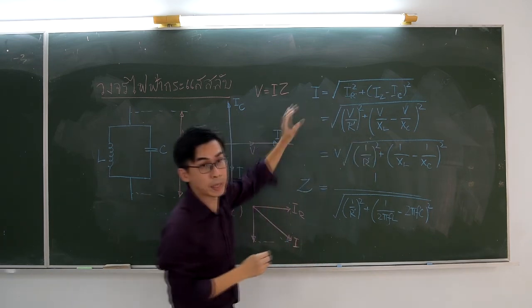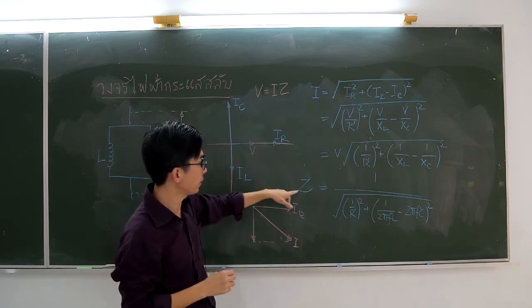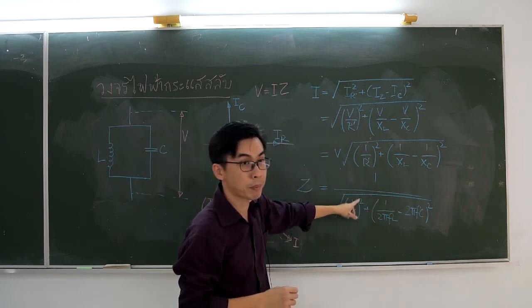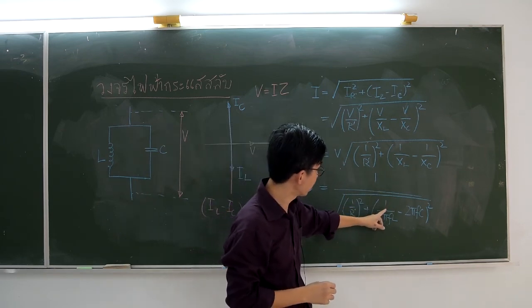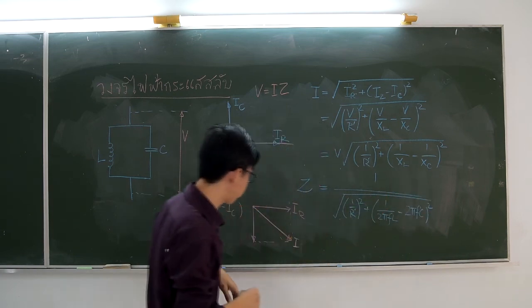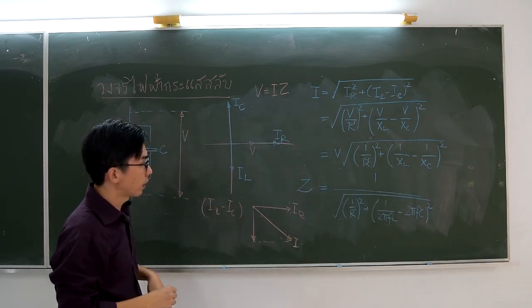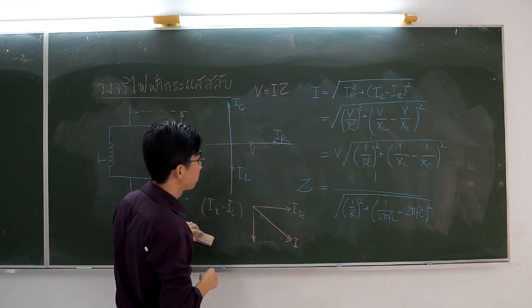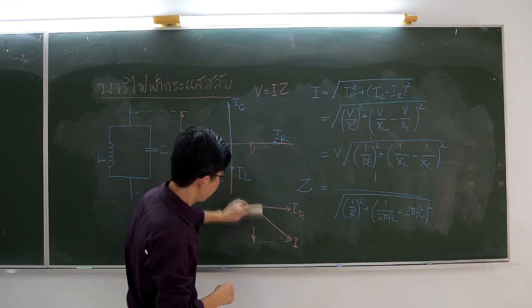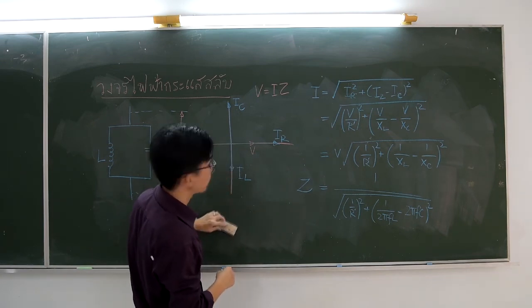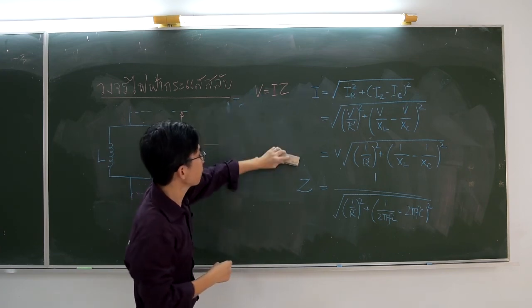Now, let's look at the graph of the impedance versus frequency. For small values of frequency, XL will dominate XC. As a result, the impedance is low. Increasing frequency will make the impedance increase.